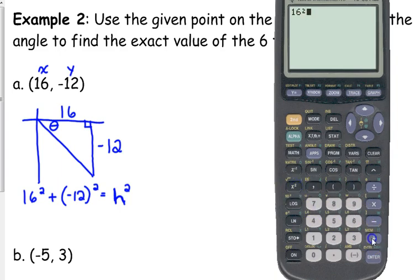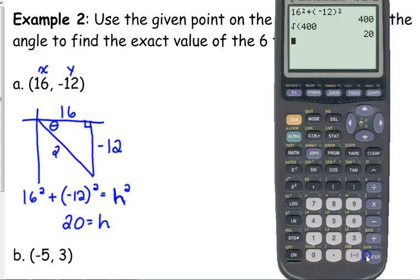So either you just leave the negative off, or if you got to put it in there, put parentheses around it first, or it will mess up your answer. So that's equal to 400. So the square root of 400 is 20, so our hypotenuse here is 20. The hypotenuse will always be positive. The hypotenuse will always be positive.